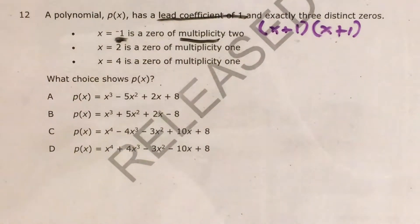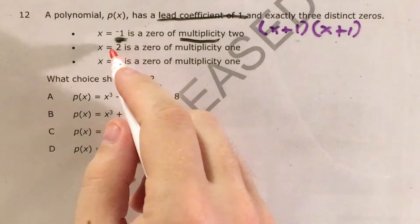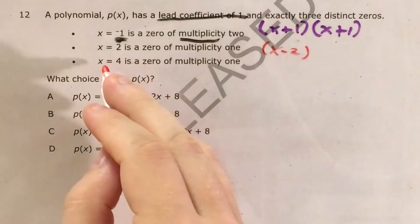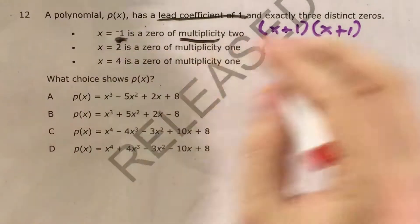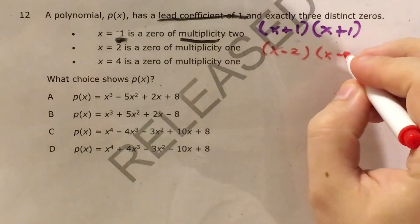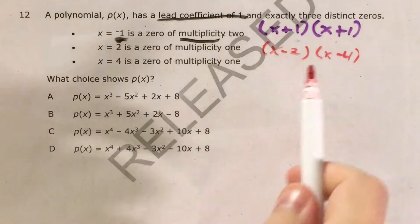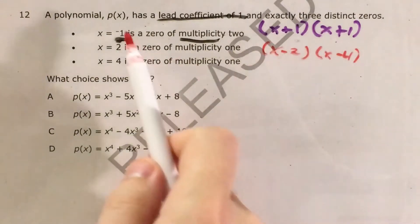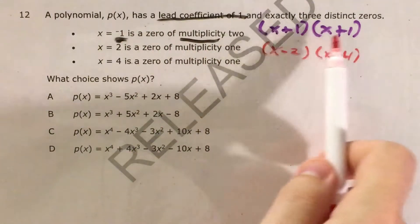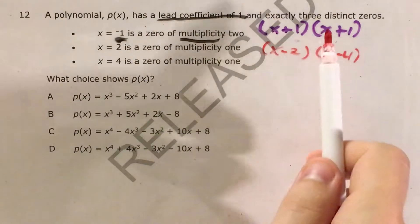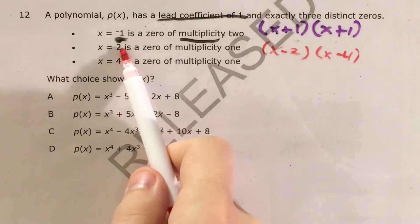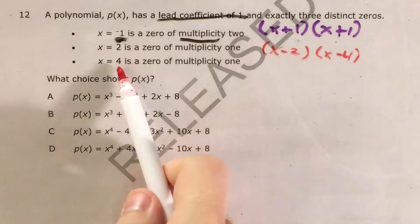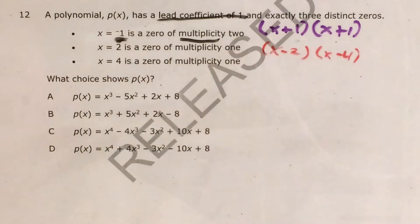I do the same thing for x equals 2 — I change it to x minus 2. And for x equals 4, I change that to x minus 4. So now I have my three distinct zeros: negative 1 with multiplicity 2 means that x plus 1 is a linear factor exactly twice, x equals 2 translates to x minus 2, and x equals 4 translates to x minus 4.